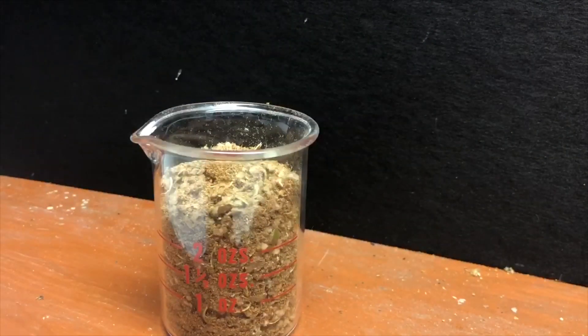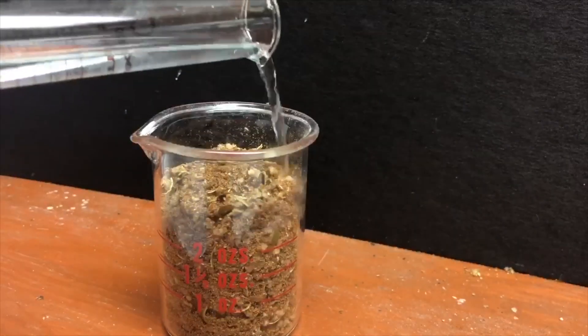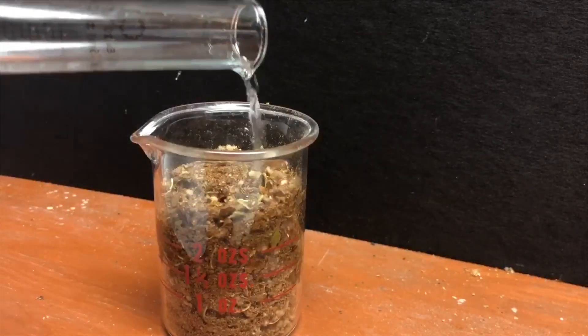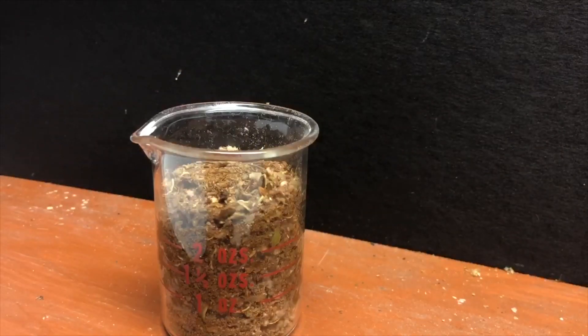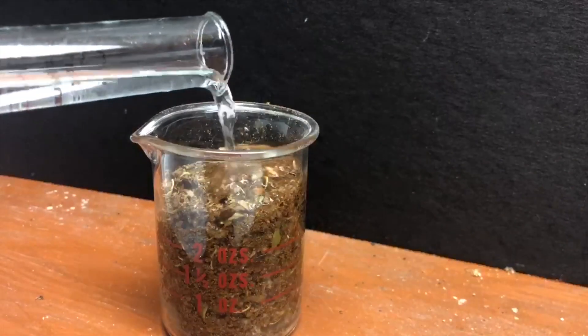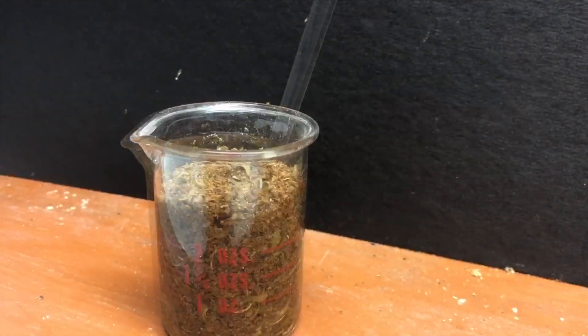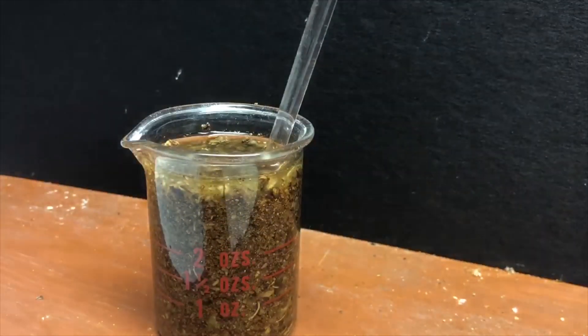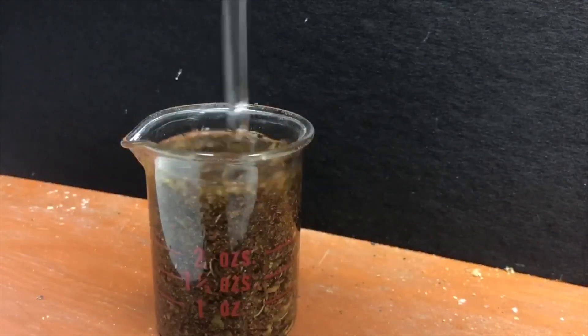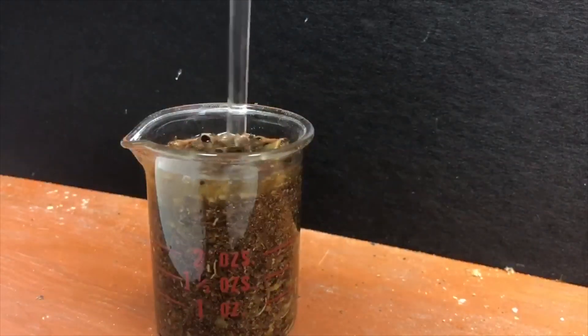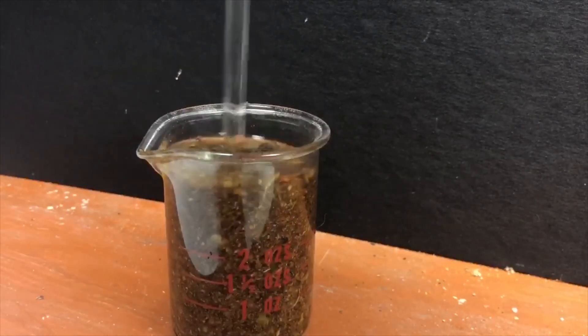Ideally, before doing the methanol extraction, you should probably do a defatting process. This is to remove all the lipids from the organic material. How you do this is add a non-polar solvent into a beaker, similar to adding the methanol. You would let the lipids get extracted and carry you away with a solvent, then you would filter it, keep the residue, and then you would do your methanol extraction on that. That should leave you with just the tannins and no fats.